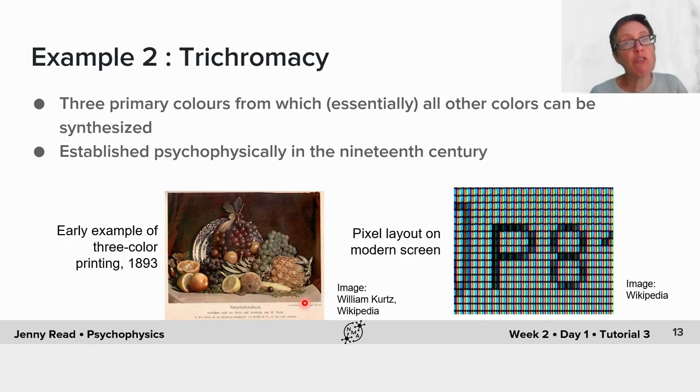Another example is trichromacy. The idea that there are just three primary colours from which essentially all other perceptible colours can be synthesised was established by psychophysics back in the 19th century and is really important for technology. We see this example of three colour printing, a really early example from 1893.